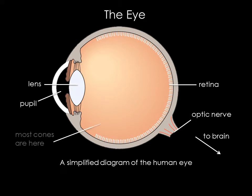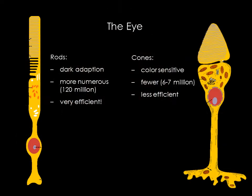Most of the cones are located on what's called the fovea centralis, or macula. The cones provide the eye's color sensitivity, whereas the rods are responsible for our dark-adapted vision. We have many more rods than cones — about 120 million rods versus 6 to 7 million cones. This is why the world looks in shades of grey and black in low light conditions.